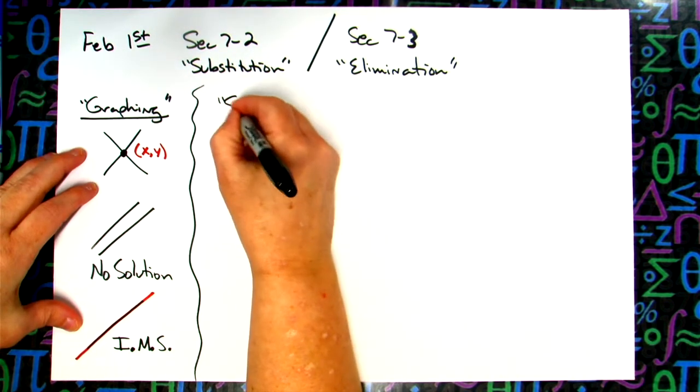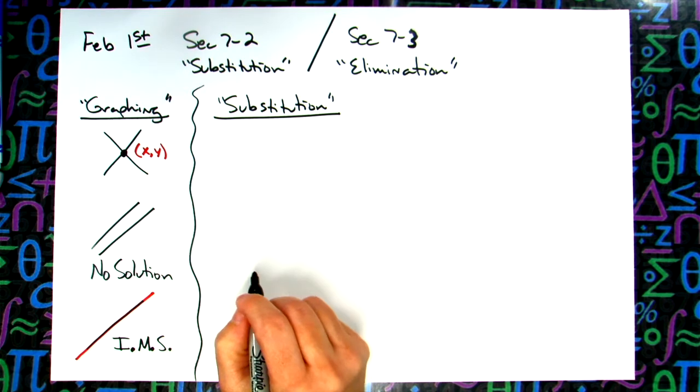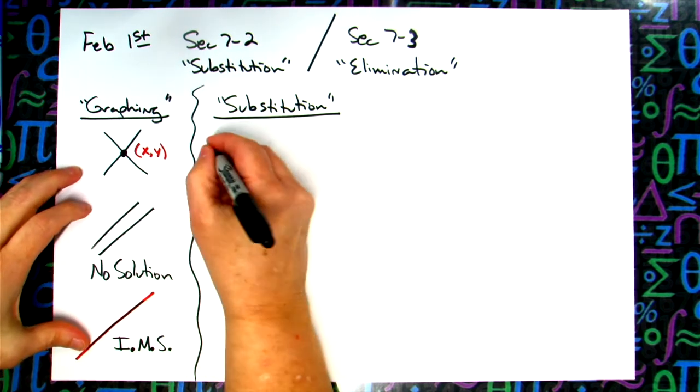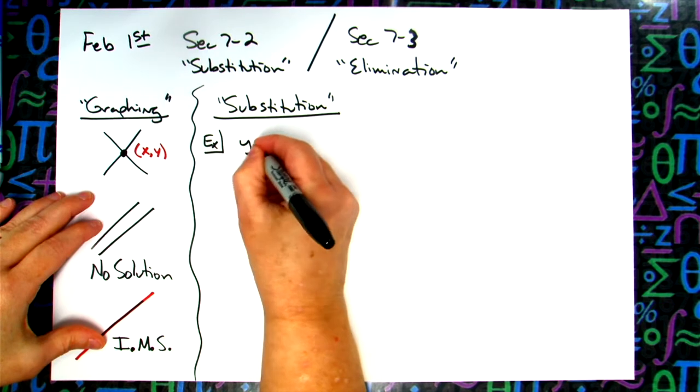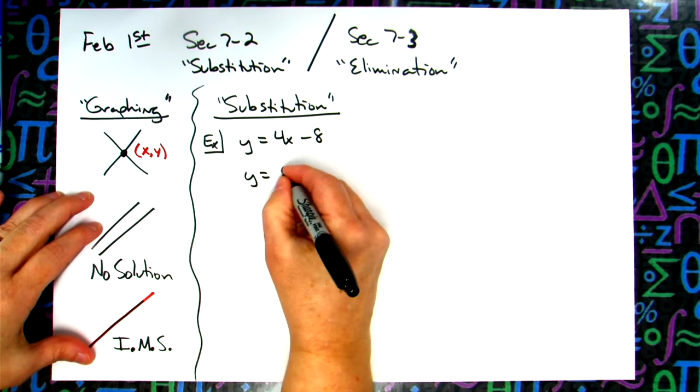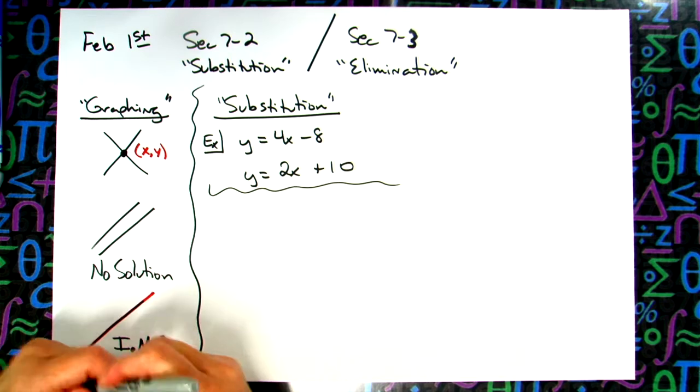Now the substitution method, which ten of you this will be review for because you did do the video notes and watched it. The whole point of substitution is you're substituting something for something else. So we'll do at least one maybe two examples here. It's really common on the substitution method for them to give you like say a y equals 4x minus 8 and then a y equals 2x plus 10.